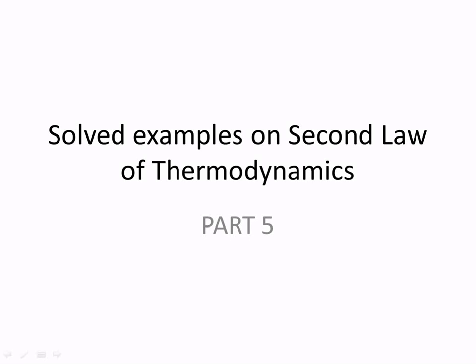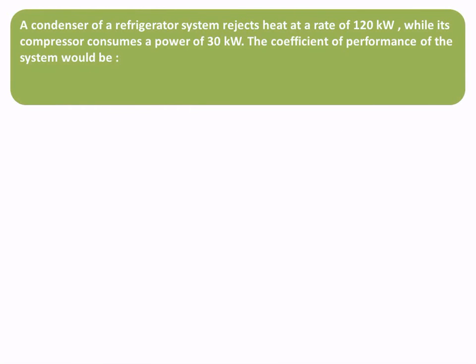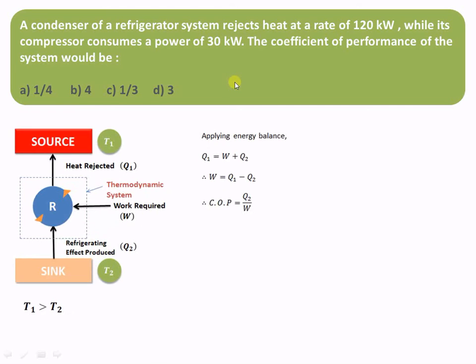Let us try to understand how to solve some examples on the second law of thermodynamics. Here we have a condenser of a refrigerator system which is rejecting heat at the rate of 120 kilowatt, that is 120 kilojoule per second, whereas the compressor consumes a power of 30 kilowatt. We have to find out what will be the coefficient of performance of the system, and there are four options.